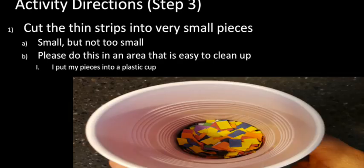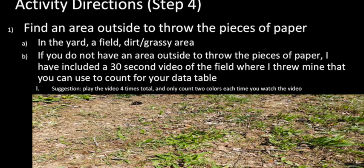After cutting into thin strips, cut those into very small pieces almost the size of confetti — small but not extremely small. Do this in an area that's easy to clean up. Find an area outside to throw the pieces of paper, such as your yard, a field, or a grassy area where you have permission. If you don't have a grassy area, a 30-second video of a field is included; run it four times, counting two different colors each time to record in your data table.